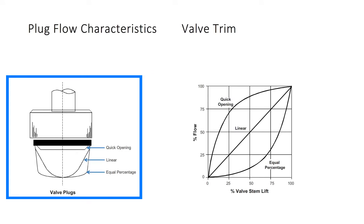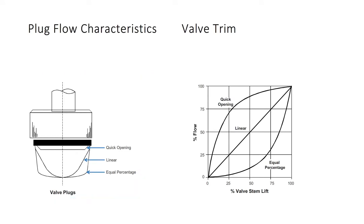The illustration on the left shows three different plug shapes. A valve has one of the three. The very shallow plug is called a quick opening plug. The plug shape shown just below it is our linear plug. The linear plug is more cone shaped.